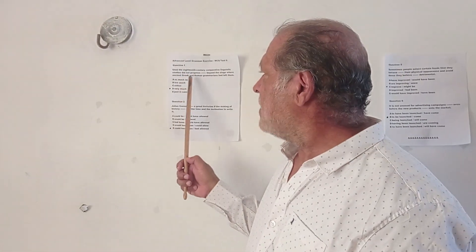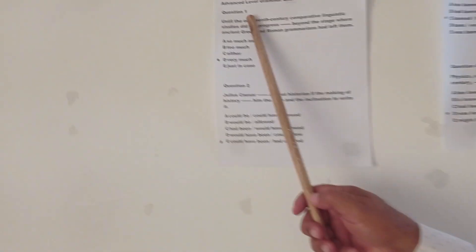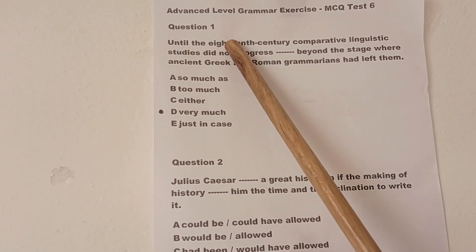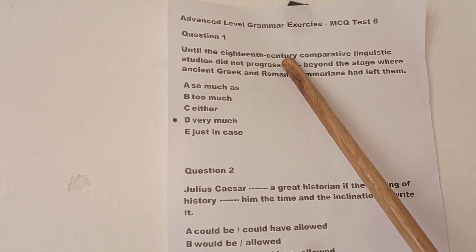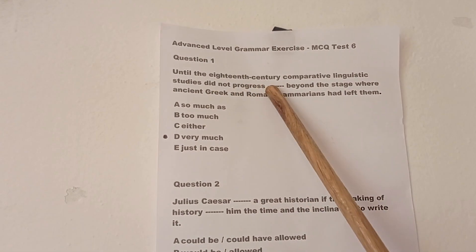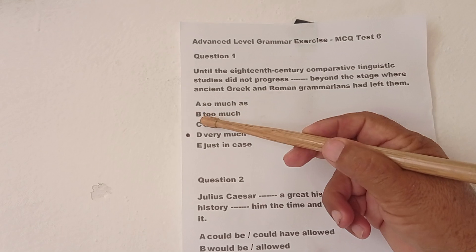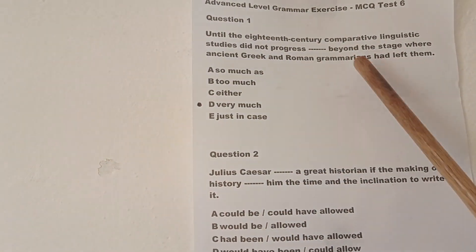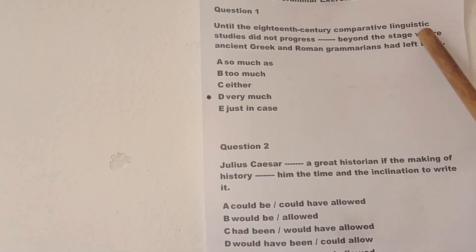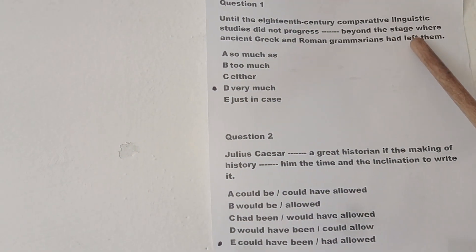Question number one, multiple choice. You choose A, B, C, D, or E. Question one: 'Until the eighth century, comparative linguistic studies did not progress — A, B, C, D, E — beyond the stage where ancient Greek and Roman grammarians had left them.'